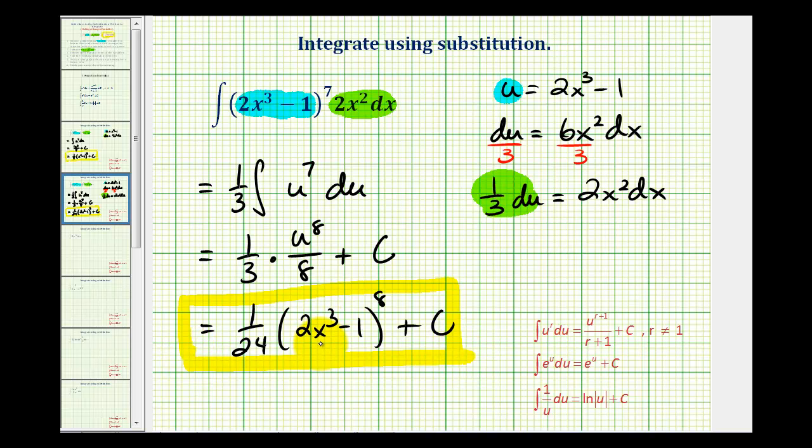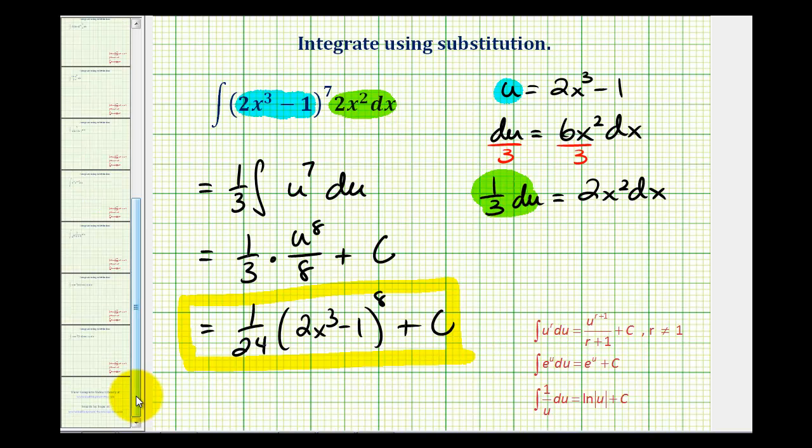So what's different about this example from the first example is differential u did not match perfectly with our integral. So we had to divide both sides of this equation by 3 in order to obtain the 2x squared dx. We'll look at another example in the next video.